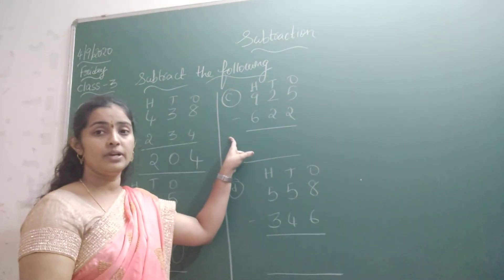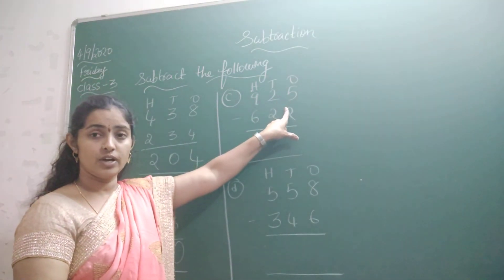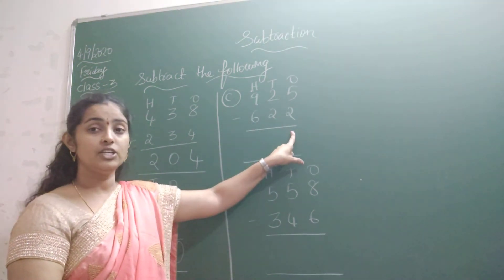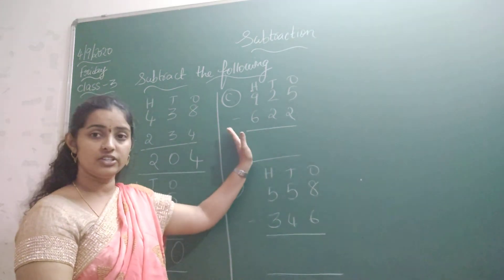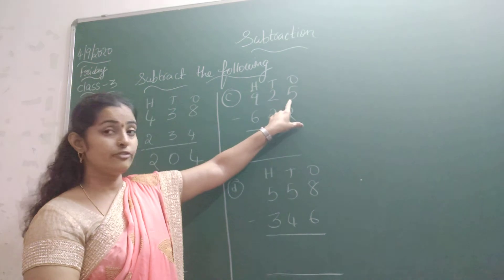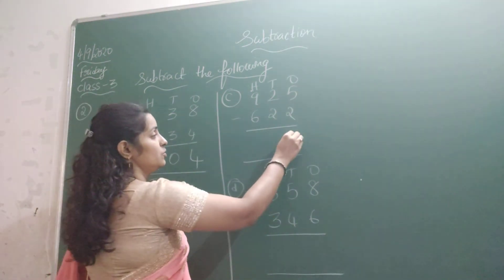Now come to the next one. What is here? Problem C. 925 minus 622. So I need to subtract one's place, ten's place, and hundred's place. So in one's place, what do you have here? That is 5. 5 minus 2. How much will you get? 5 minus 2 is 3.